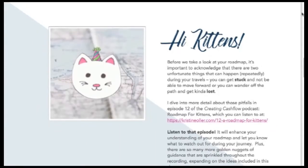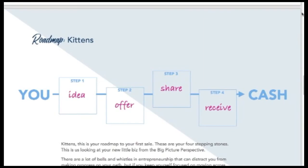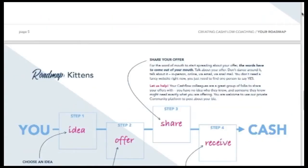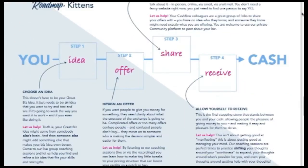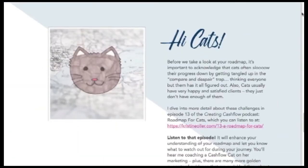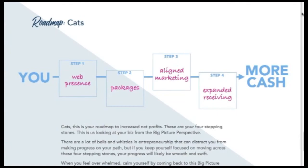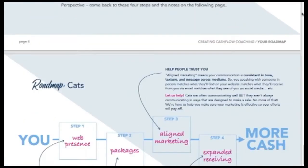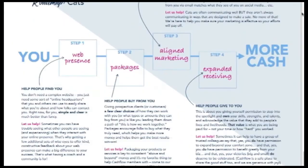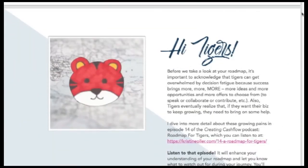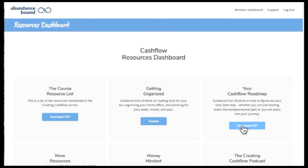In that PDF, there are actually three roadmaps — one for kittens, one for cats, and one for tigers. One of these roadmaps will match the stage of business that you are currently at.